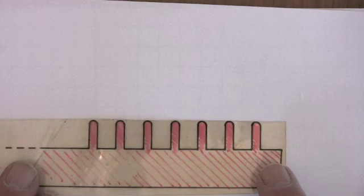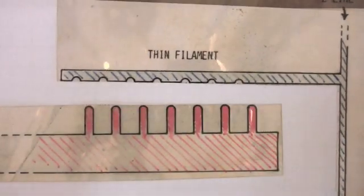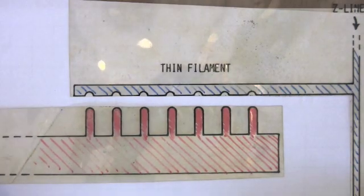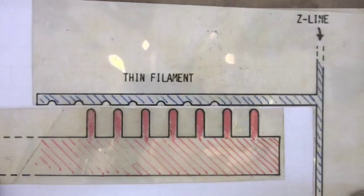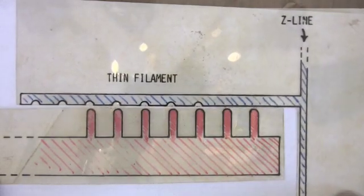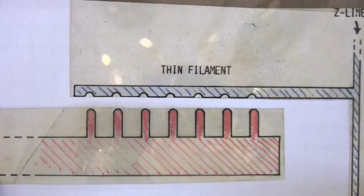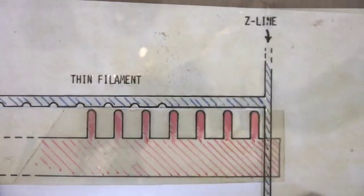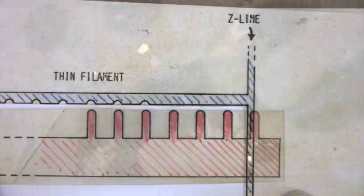Here's the thick filament and here's the thin filament. When the muscle contracts, this is what happens: bind, bend, slide, relax, elongate. Cardiac muscle is a little different from skeletal muscle, because in the healthy heart it does not expand beyond maximum overlap.